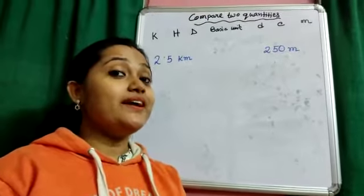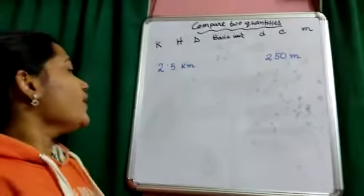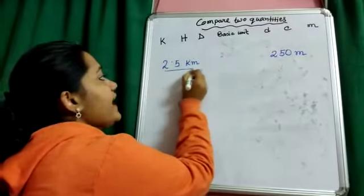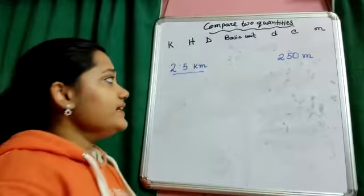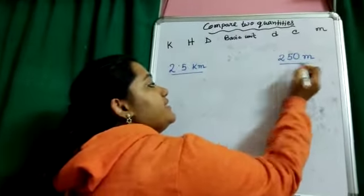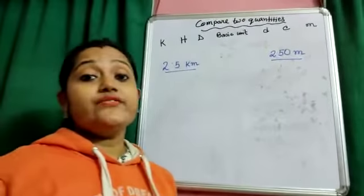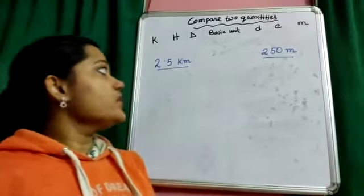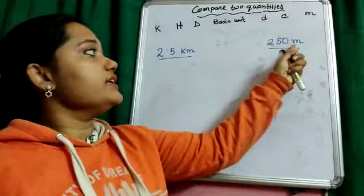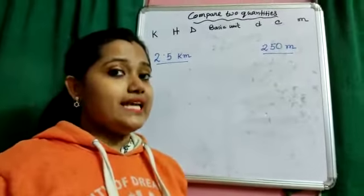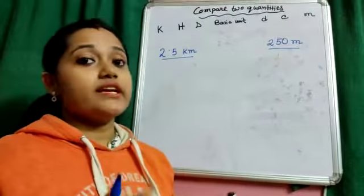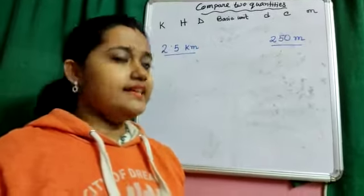Now, we will compare two quantities. One is given here as 2.5 kilometer and another one is given as 250 meter. By observing the unit, you can see that both of these are talking about length.